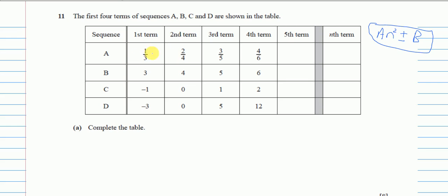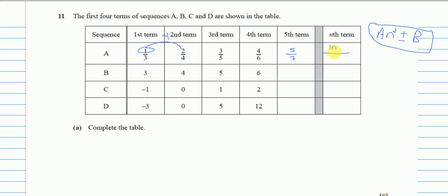The first sequence is 1, 2, 3, 4, 5 — very simple. To find the nth term, we see how much it is increasing: it increases by one, so we have 1n. Then to find the constant, we compare 1n with the first term: it's exactly the same, so we don't add or subtract anything. The formula is just n.